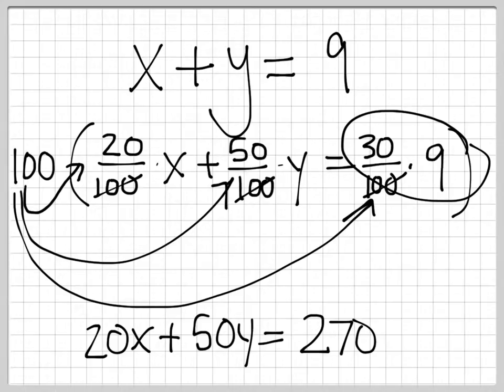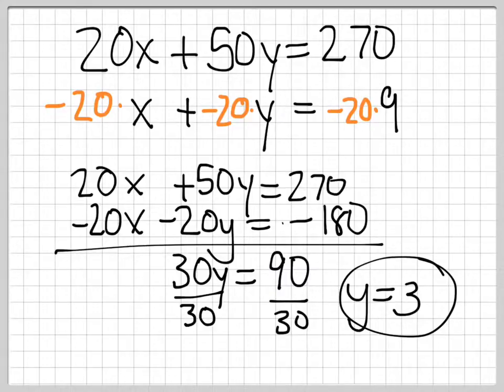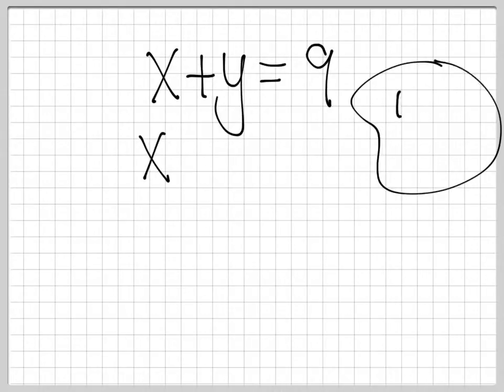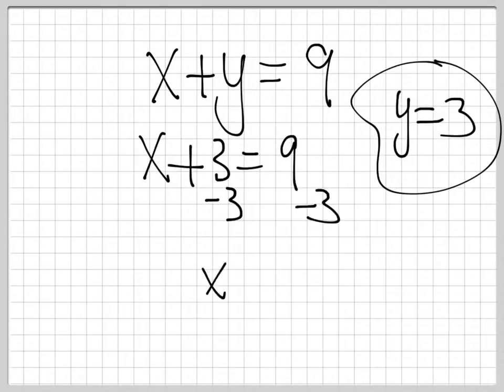Looking back, the top equation here, x plus y equals 9, gives us exactly the answer we want to solve for the other variable. We know that y equals 3, and so if we have x plus y equals 9, and y equals 3, we get x plus 3 is 9, and so x is 6.